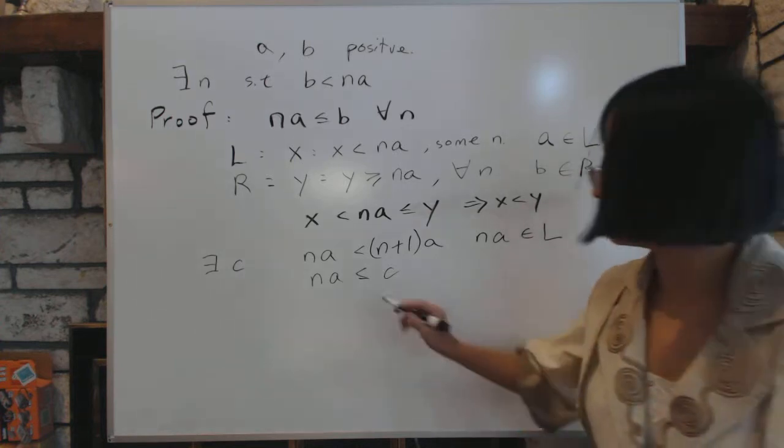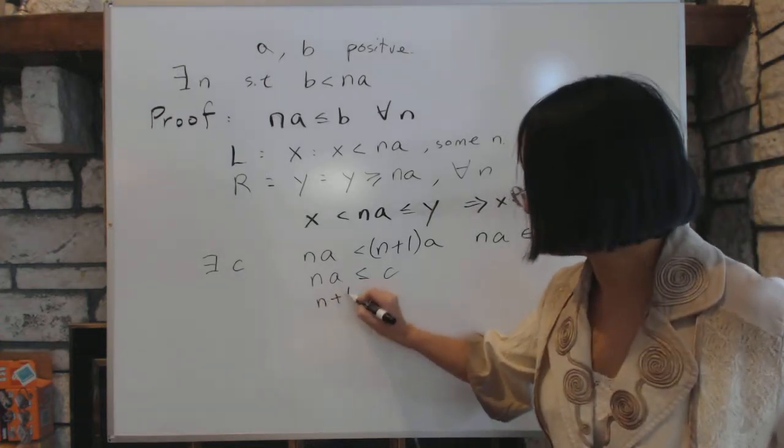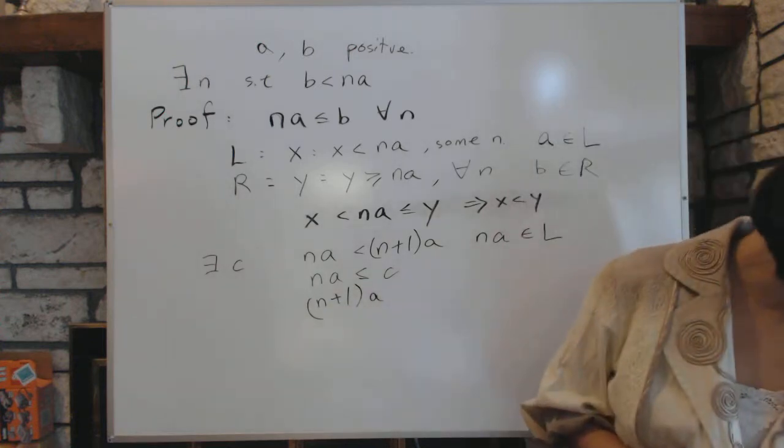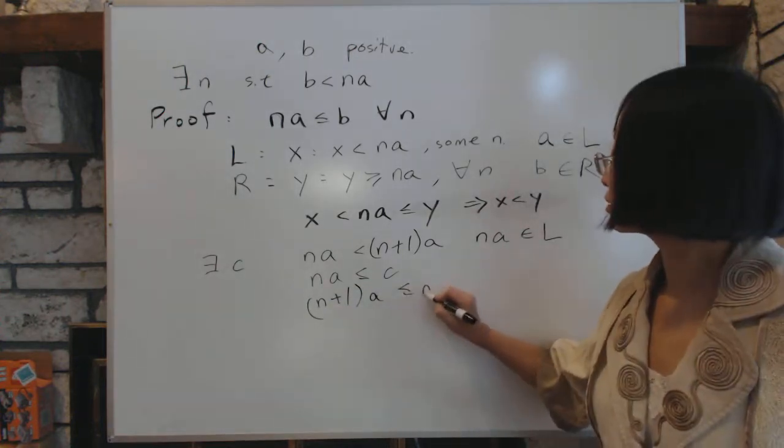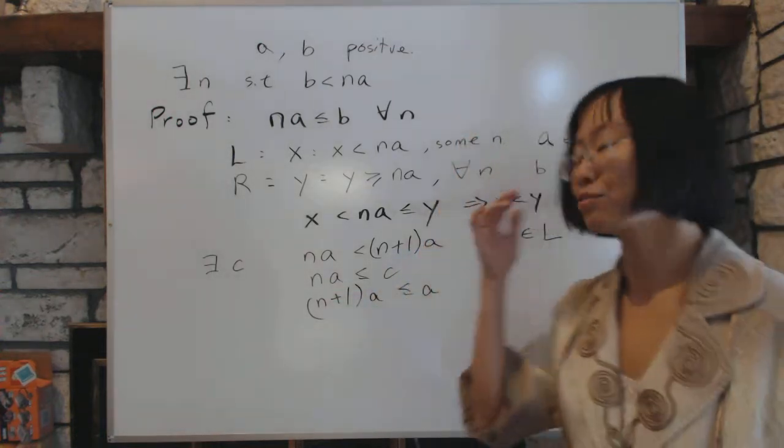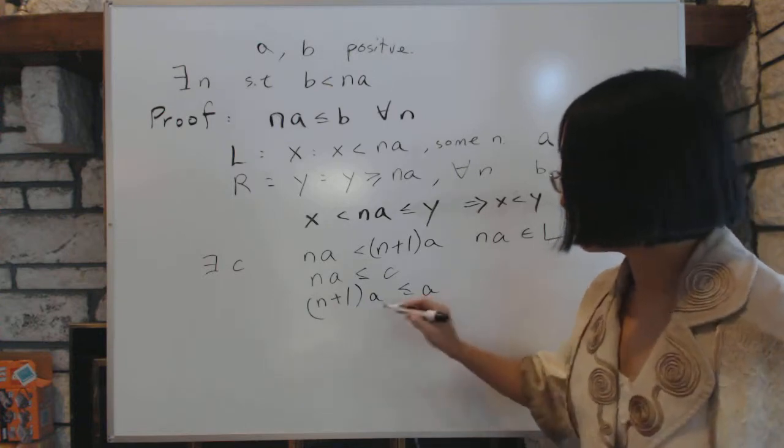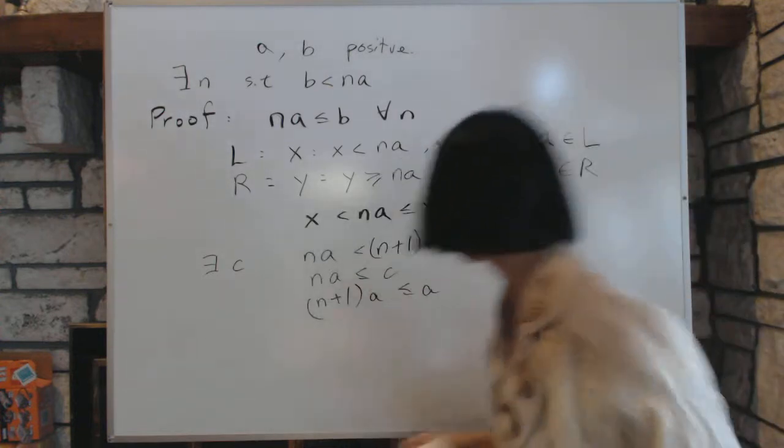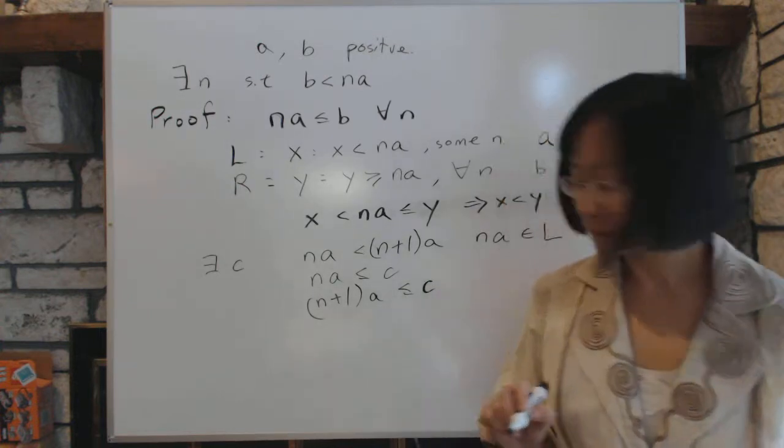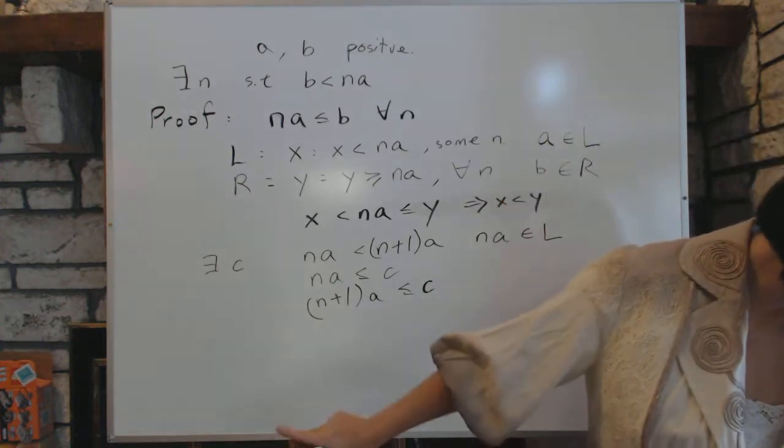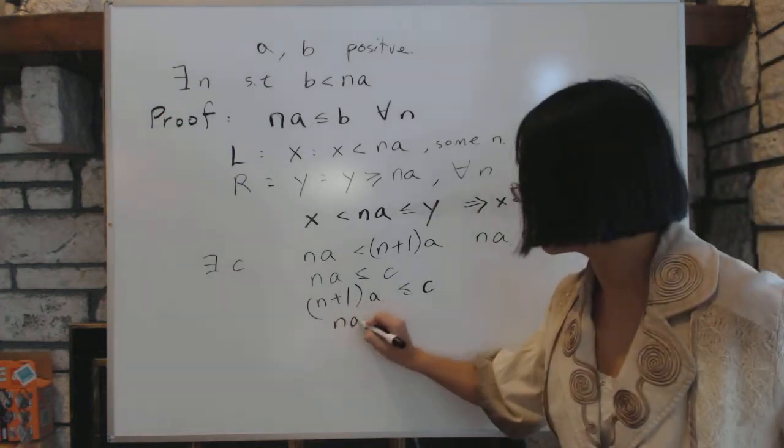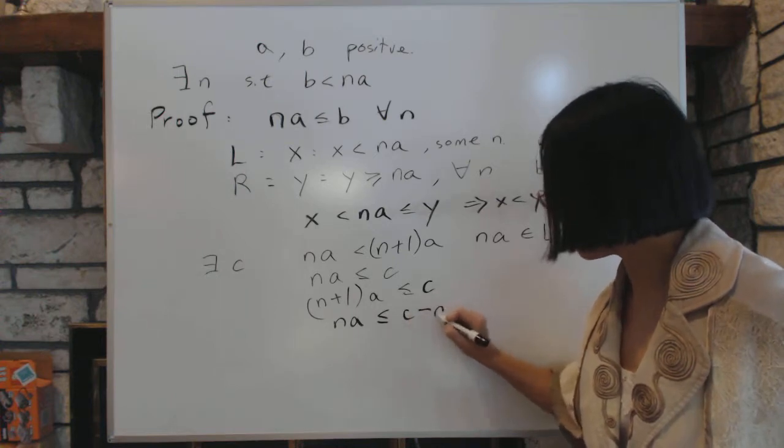And by the same principle, then here's a weird part. N plus 1A is also less than or equal to C. Because we don't know what N is. N might as well just be N plus 1. It's just a natural number. Now, here's where things get interesting. Now, if you rewrite this statement, then we have, you just do the basic algebra here, NA less than C minus A.